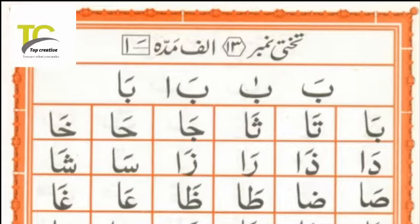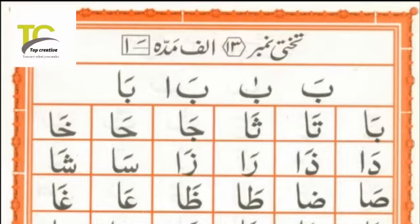اب الف مدہ کب بنتا ہے؟ یہ آپ لوگوں کے پارے میں تختی نمبر تیرہ ہے — اگر آپ لوگ نکال کے اپنے سامنے رکھ لیں تو آپ لوگوں کو سمجھ آ جائے گی کہ یہ الف مدہ کیا ہے۔ اگر آپ سامنے رکھ کے دیکھیں گے تو زیادہ اچھے سے سمجھ آئے گی۔